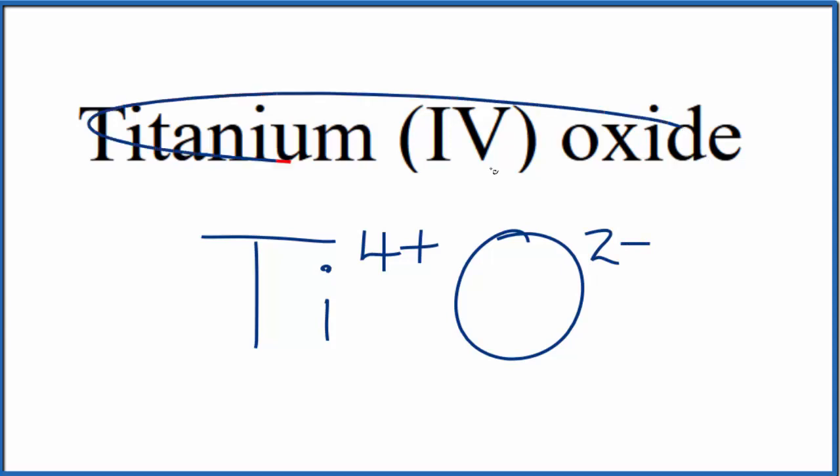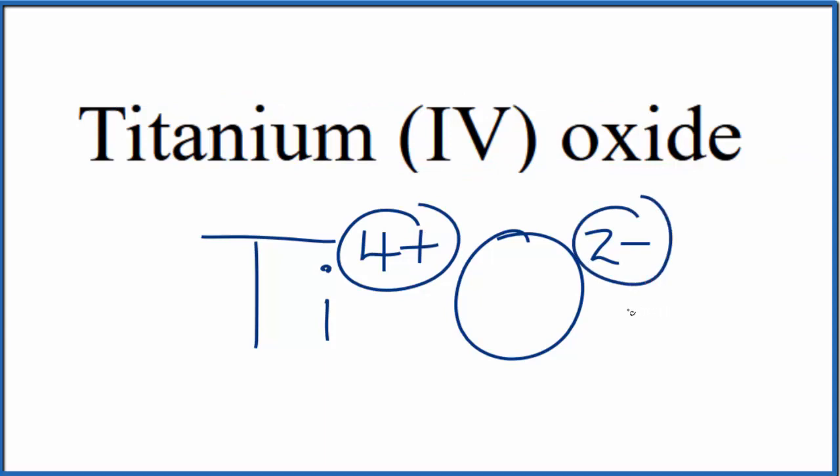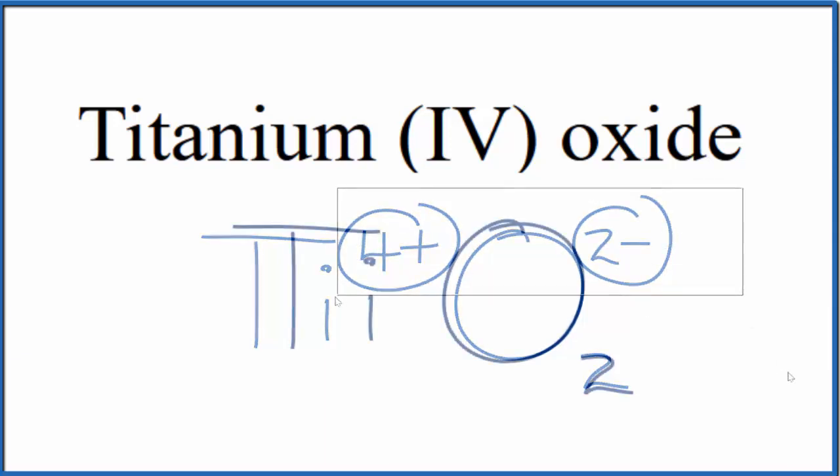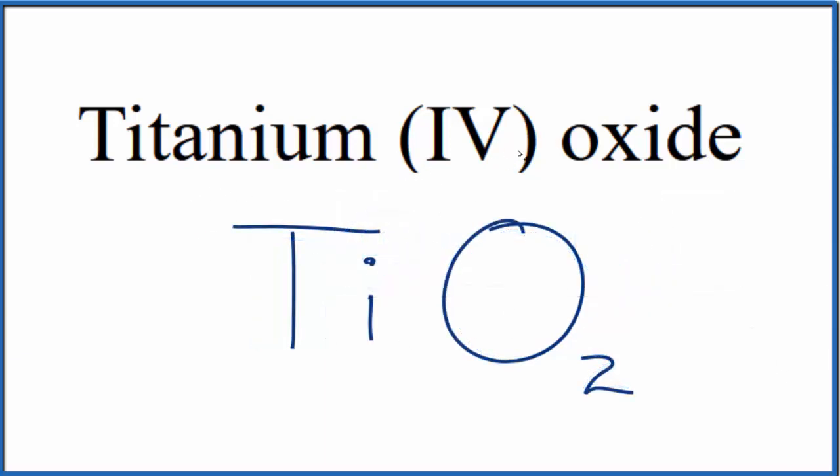And since titanium (IV) oxide is neutral, it doesn't say ion after it, these charges need to add up to 0. We need a net charge of 0. If we had two of these oxide ions here, 2 times 2-, that's 4-, that would balance out the 4+, give us a net charge of 0. So this is the formula for titanium (IV) oxide.